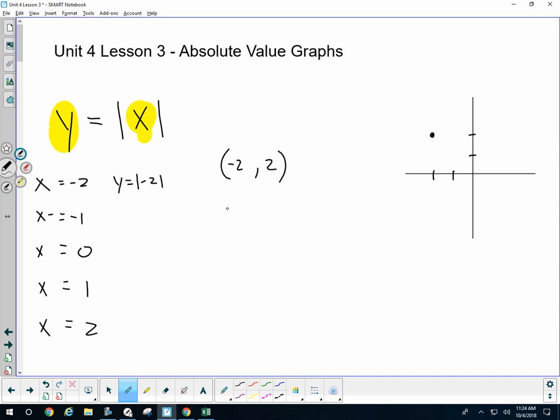If I continue to plug in, I would have the point negative 1, 1, 0, 0, 1, 1, and 2, 2. Creating this very distinct type of graph.